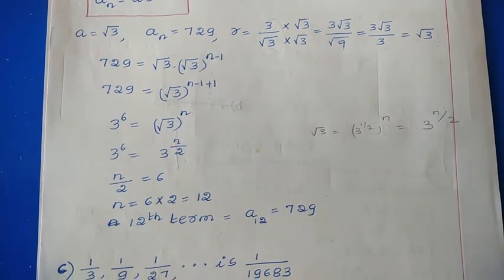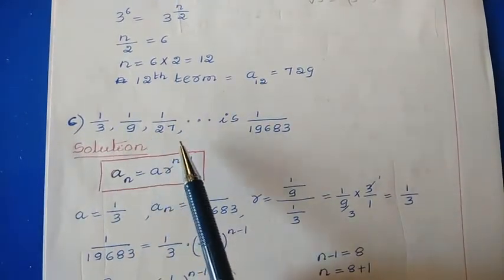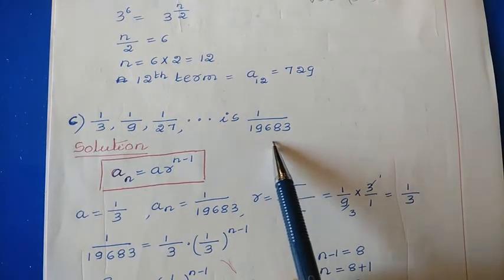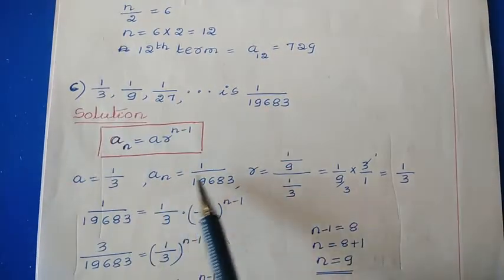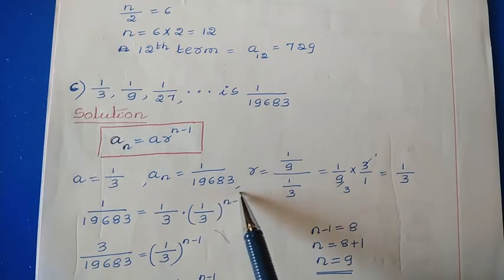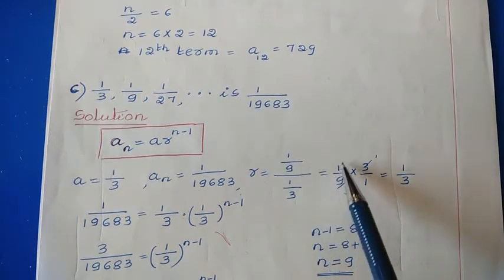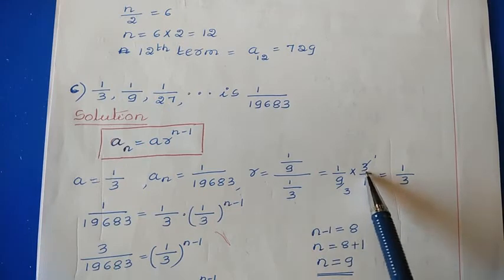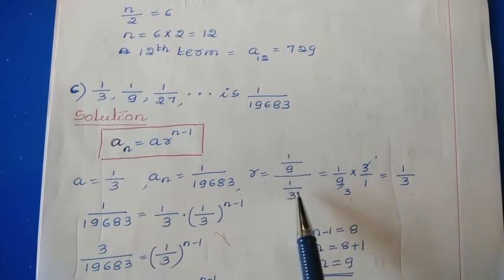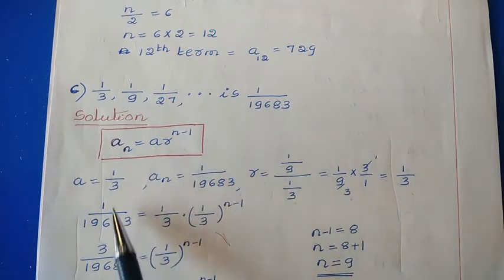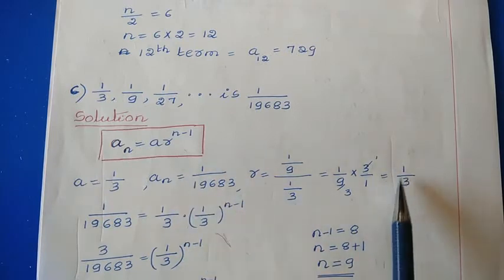Next, Question 5c: the sequence 1/3, 1/9, 1/27, and the last term is 1/19683. Using the same formula, a = 1/3, aₙ = 1/19683, and r = (1/9) ÷ (1/3) = (1/9) × 3 = 1/3. So r = 1/3. Substituting: 1/19683 = (1/3) · (1/3)^(n-1).